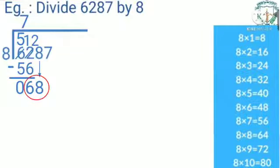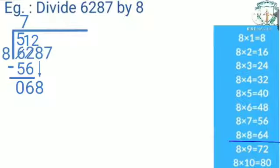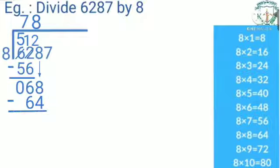Then we bring down the next digit, that is 8, and get the new dividend 68. Now let us divide 68 by 8. Let us check whether 68 is there in 8's table. We have 64 and 72; since 68 is less than 72, we take 64 — that is, 8 eights are 64. Write 8 in the quotient's place and write 64 below 68 and subtract. 8 minus 4 is 4; 6 minus 6 is 0.